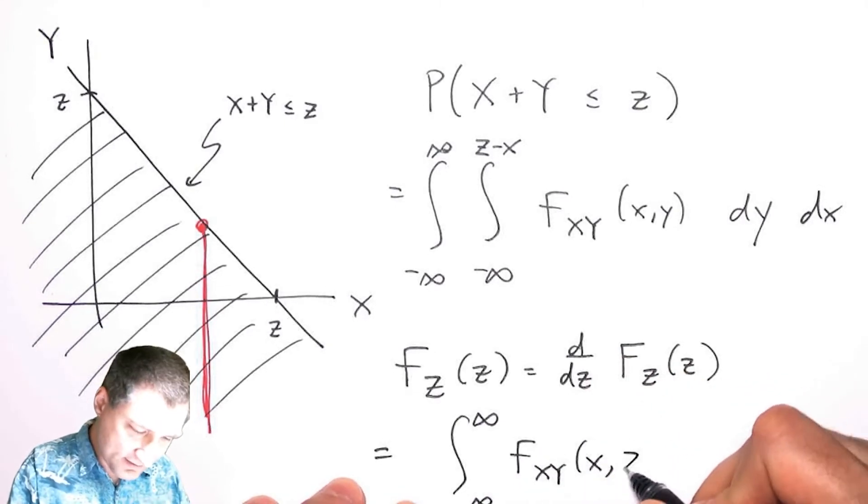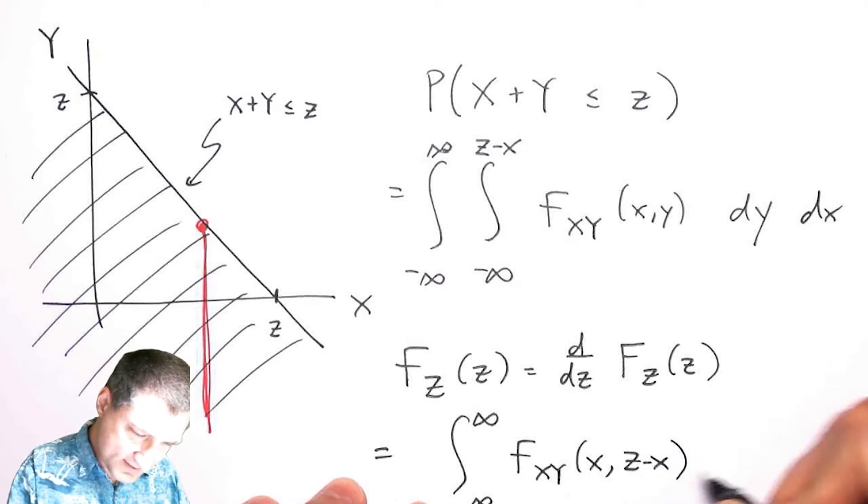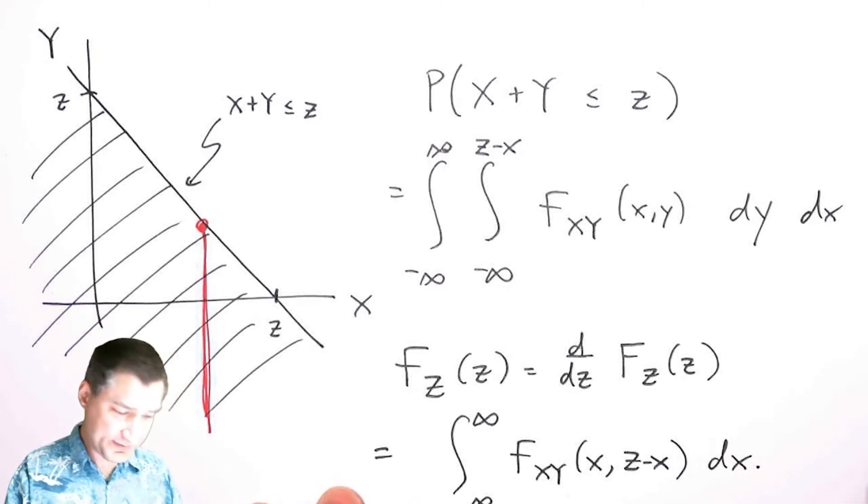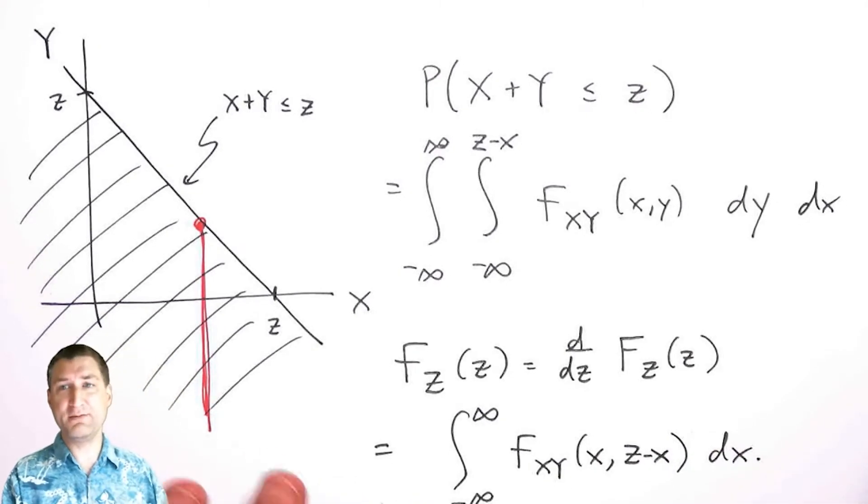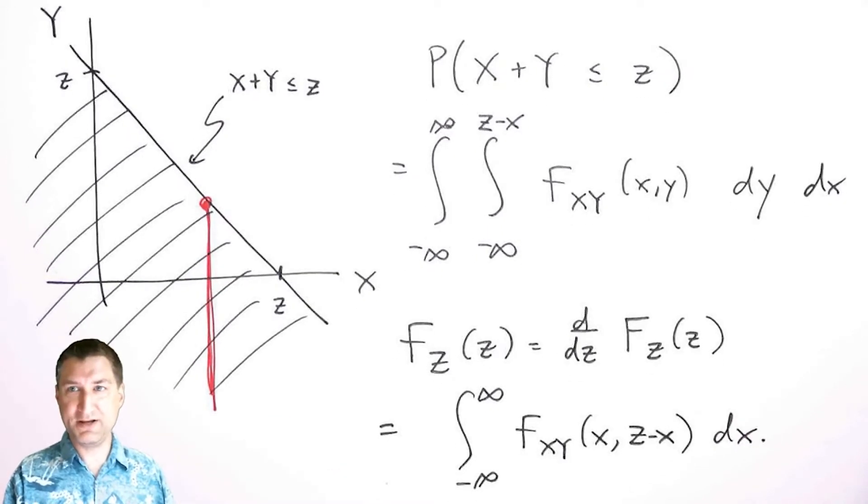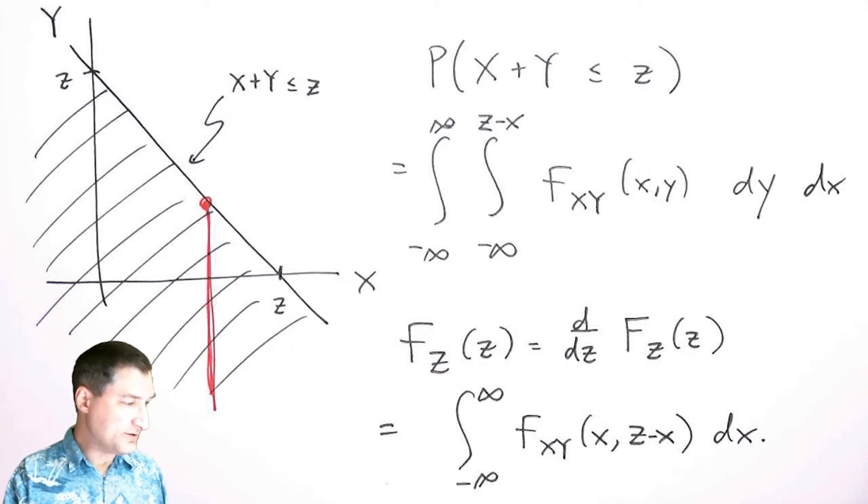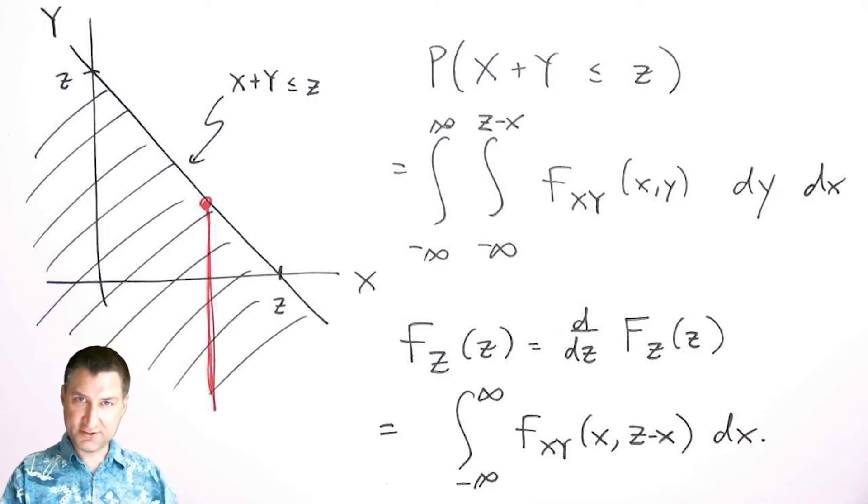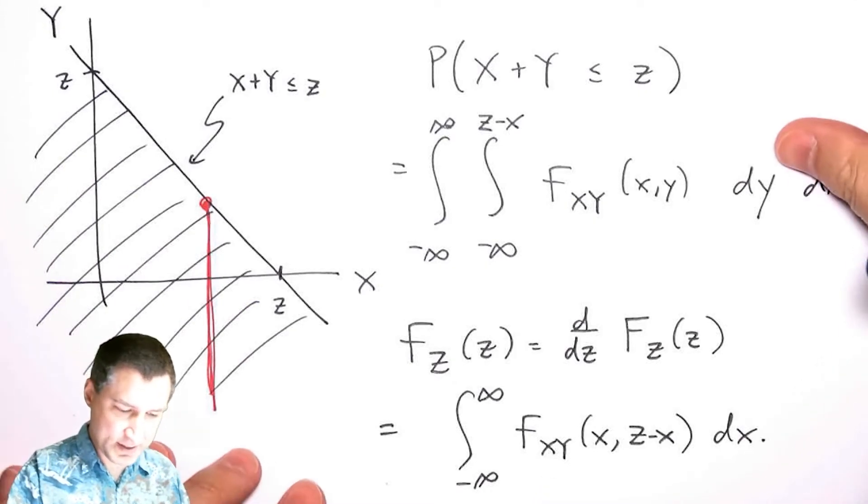By the fundamental theorem of calculus, I substitute y for this z minus x dx. Now without knowing anything more about the joint PDF of X and Y, that's where I can stop. One thing I could note is that if X and Y were independent, then I could decouple the joint PDF into the X and Y pieces.